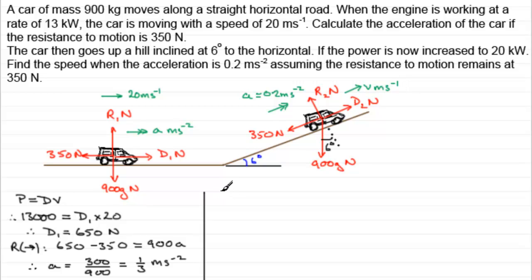Okay, well, let's see how we do it then. We resolve, first of all, up the plane. So, if we resolve up the plane, that way being positive, we've got D2 then, minus the components of the weight down the plane, which is going to be minus 900 G sine 6 degrees. We've also got the resistance here acting down the plane, so that's going to be minus 350. And all of this resultant force is going to equal mass times acceleration, mass being 900. We know that the acceleration is 0.2, so multiply that by 0.2.